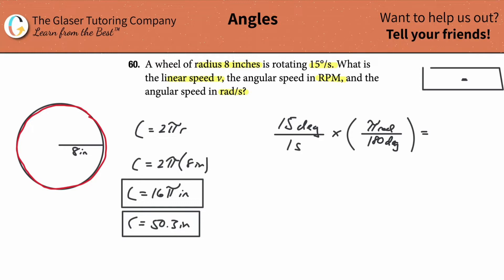So we compute 15 times π divided by 180. If you want an exact answer you can leave it in that form, but numerically this works out to be approximately 0.262 radians per second. That takes care of the radians per second part.